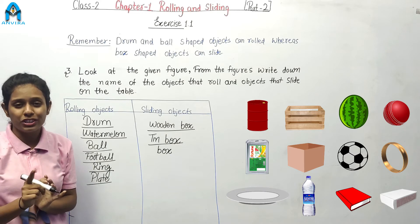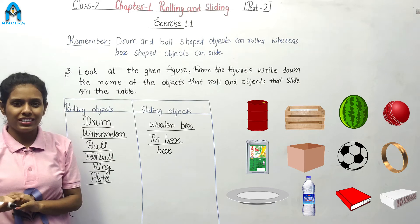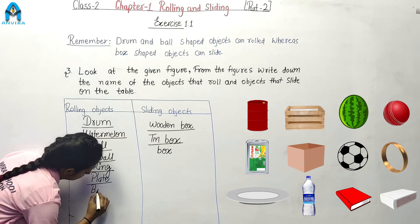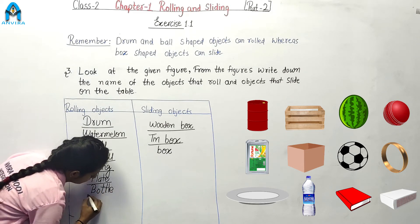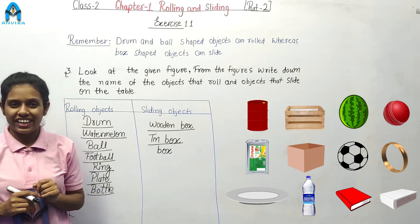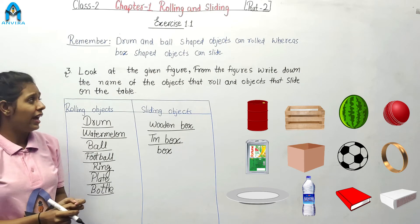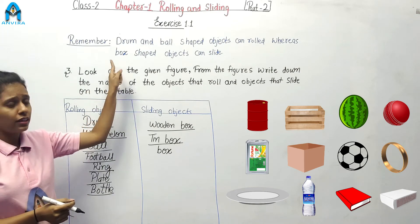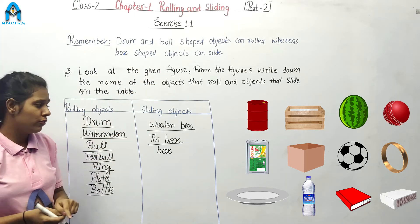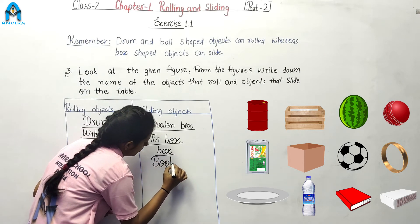Let's go to the next. What is this? This is a book. The shape of book is like a box, and box shaped objects can slide. So, we are writing book on the sliding side.